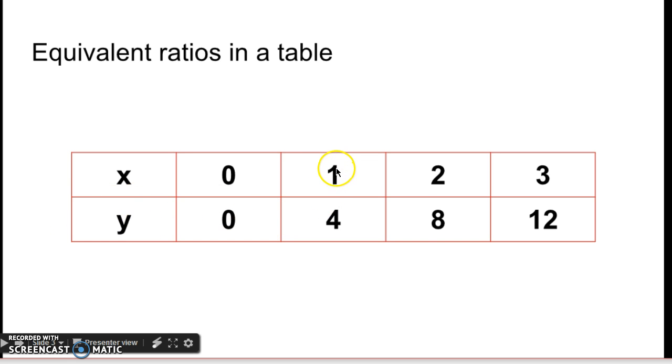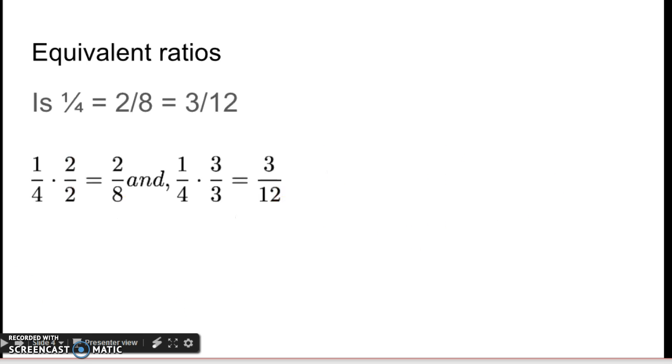So if I take these ratios, 1 fourth, 2 eighths, and 3 twelfths, and see if they're equivalent. Is 1 fourth equal to 2 eighths equal to 3 twelfths? Well, 1 fourth times 2 halves equals 2 eighths, so those are equivalent. And also 1 fourth times 3 thirds equals 3 twelfths, so those are equivalent.